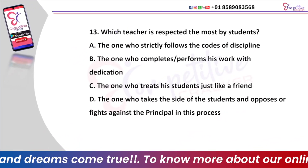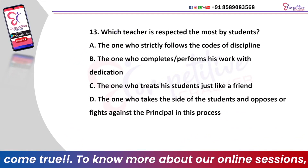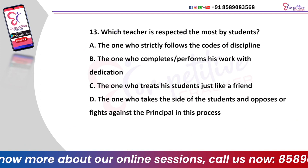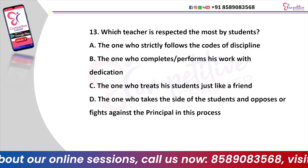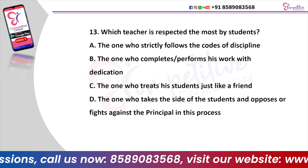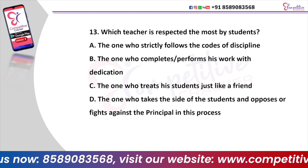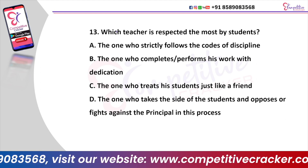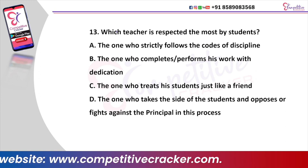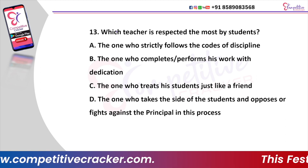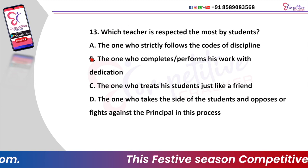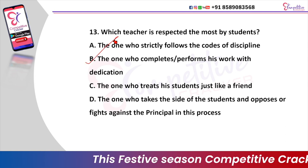Next question. Which teacher is respected the most by students? Option A, the one who strictly follows the code of discipline. Option B, the one who performs his work with dedication. Option C, the one who treats students just like a friend. Option D, the one who takes the side of the student and opposes the principal. The right answer is Option B — the one who performs his work with dedication.